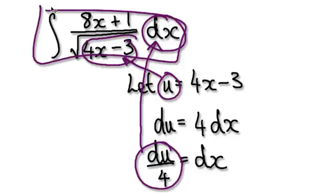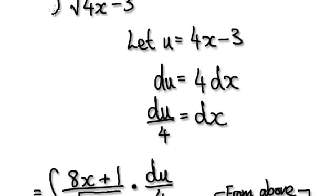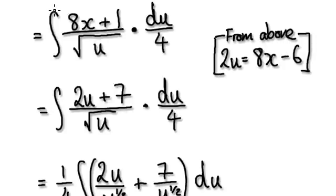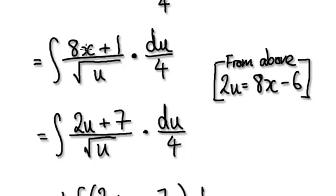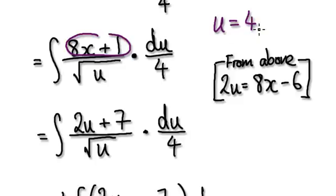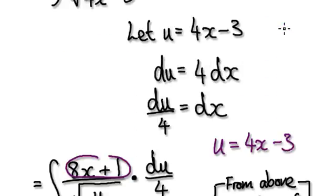So this whole thing here will become this. But the thing is, we are integrating with respect to u, so we don't want this x lingering around. The way we get rid of this is to go back to our u. Remember, u equals 4x minus 3 — that's what we set u as.